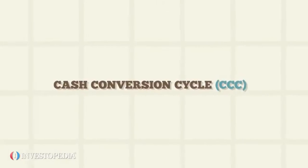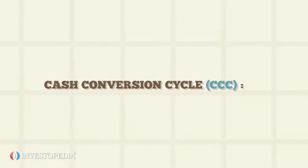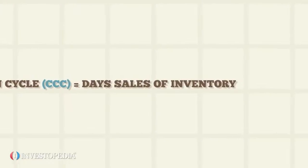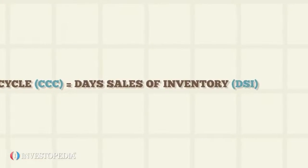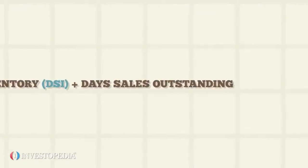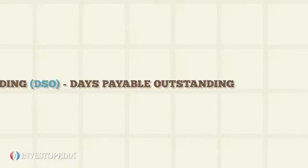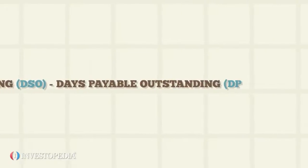The cash conversion cycle equals the days sales of inventory (DSI), plus days sales outstanding (DSO), minus days payable outstanding (DPO).